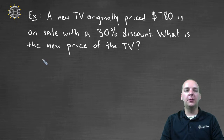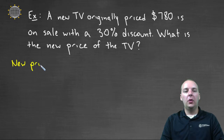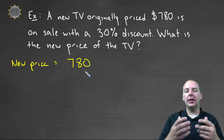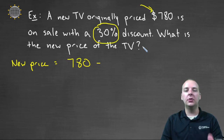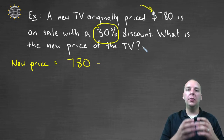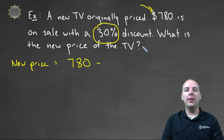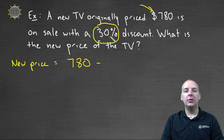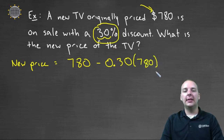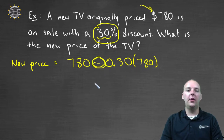Let's apply those formulas. Our new price will be our original price of seven hundred and eighty dollars, either plus or minus a certain amount. Since this is a discount, we're going to take some money off of seven eighty — thirty percent of seven eighty. It's very important when dealing with percentages in real life problems that we write the percentage as a decimal. We move the decimal place two places to the left, giving us zero point three zero times seven eighty — that's the portion of the original price that will be taken off.